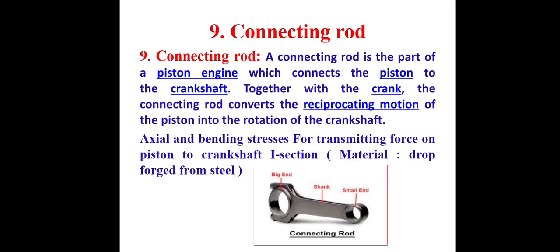Next is the connecting rod. It is a rod of circular or rectangular cross-section with two ends: a big end and a small end. The small end is connected to the piston side, and the big end is connected to the crank. The connecting rod transfers the reciprocating motion from the piston to the crank. Connecting rods are generally made by the forging process, and the material used is drop-forged steel.